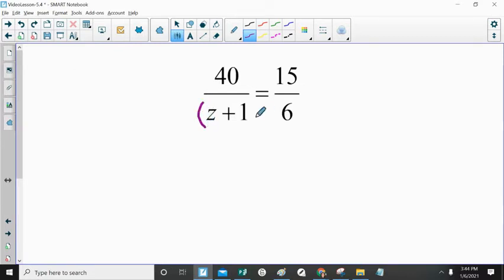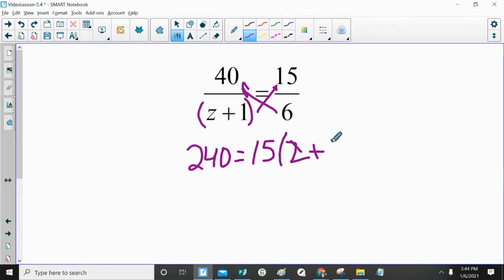Sometimes we have an expression as part of our proportion. You follow the same process. You cross-multiply and you write your equation. In this case, we have to distribute this 15 to everything inside our parentheses, or we can divide everything by 15. So I'm going to choose to divide both sides of my equation by 15 first.